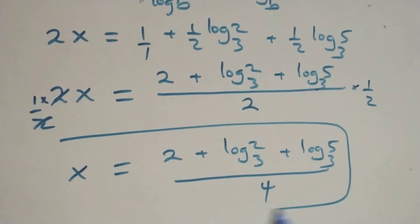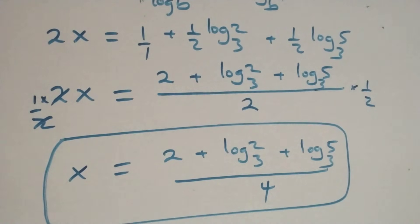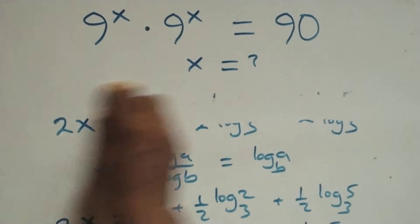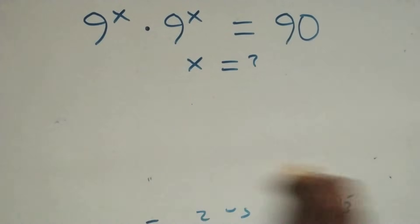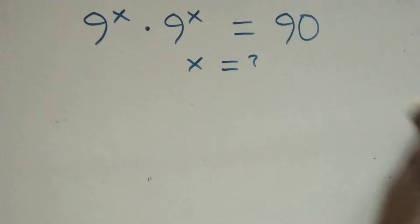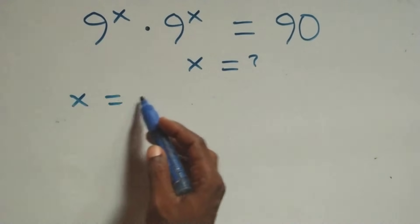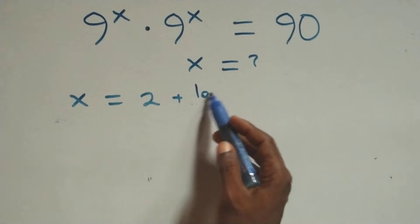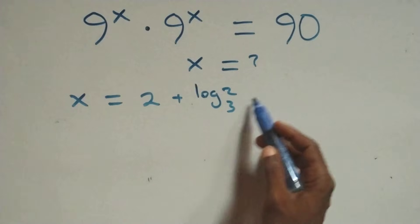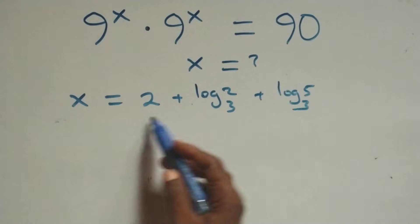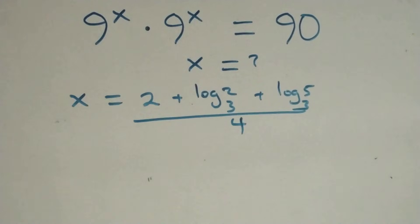We now have the value of x. Let us check if this satisfies the original equation. We substitute x equals 2 plus log base 3 of 2 plus log base 3 of 5, all over 4, back into the original equation.